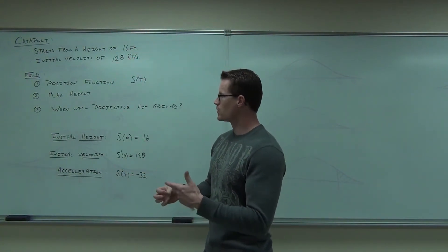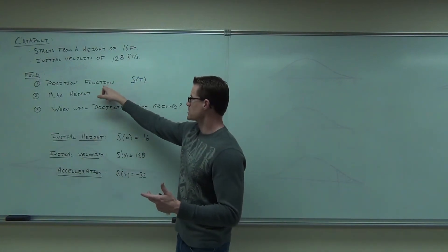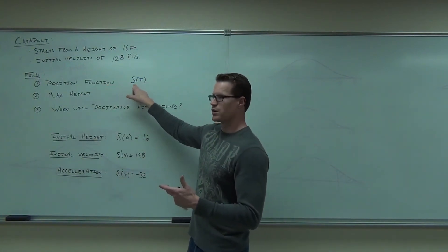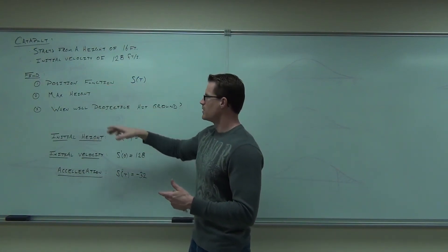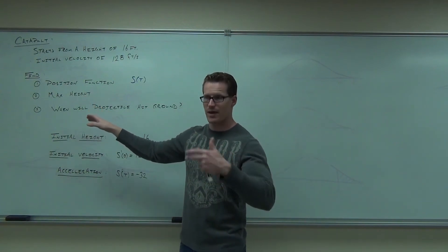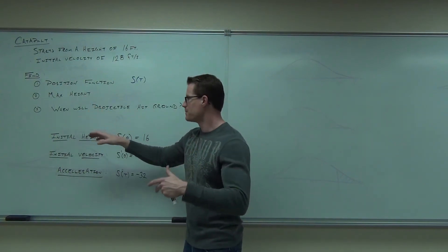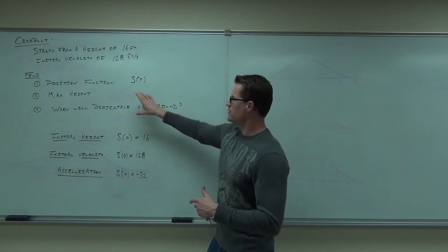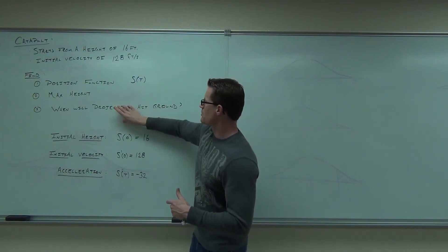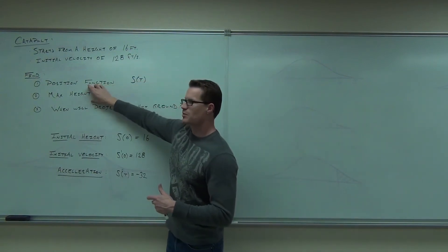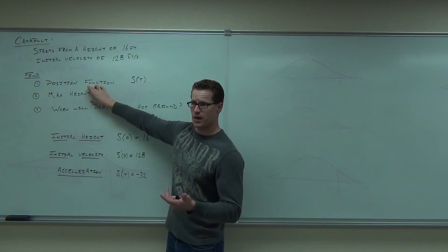What our goals here are: find the position function — that's position according to time. Find the maximum height — we already know how to find maximum and minimum. And we're going to find out when the projectile will hit the ground. This is going to be based off our position function. The maximum height we'll probably use our first derivative for.